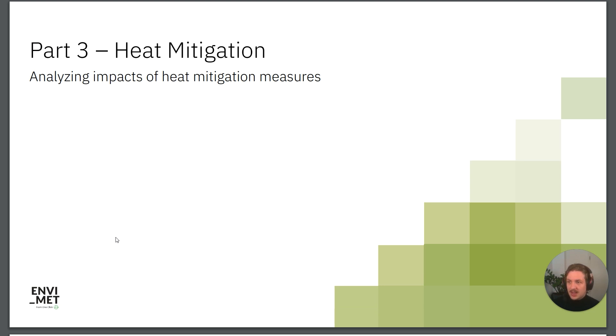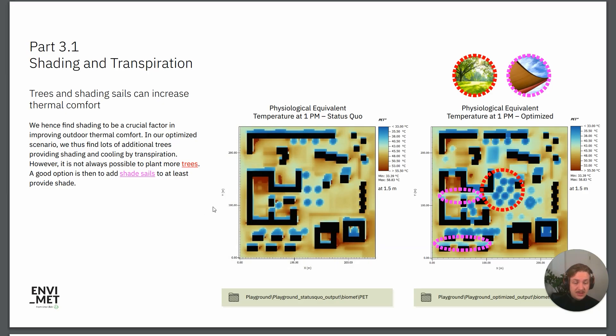Everything is explained here. We won't go into detail about that now, but then we go into the third chapter where we have a look at some different microclimate phenomena and also we will have a look at the impacts of different heat mitigation measures. Here, for example, we are comparing the two scenarios and what impact it has to increase the vegetation cover by planting some more trees.